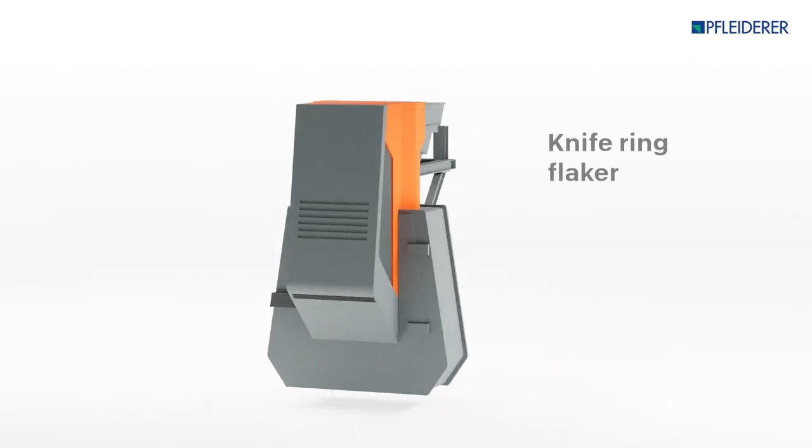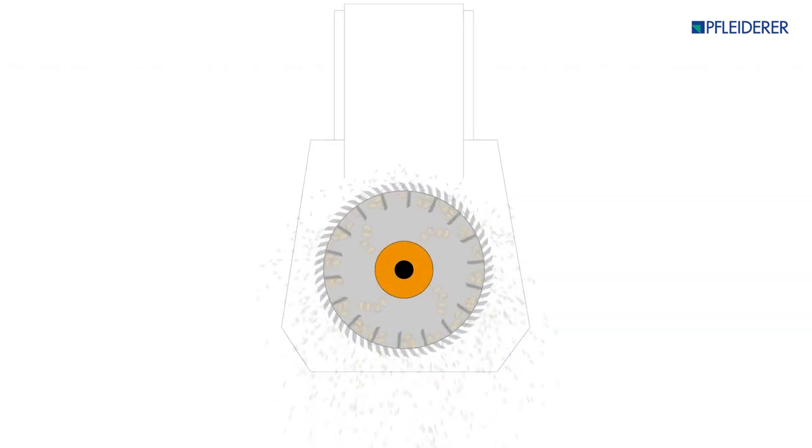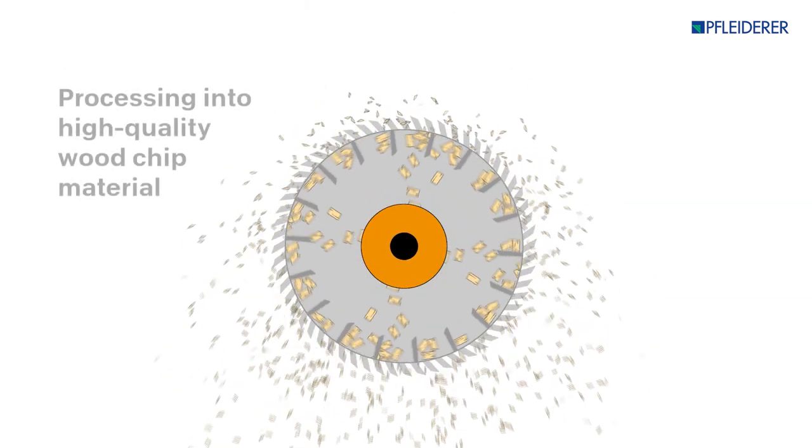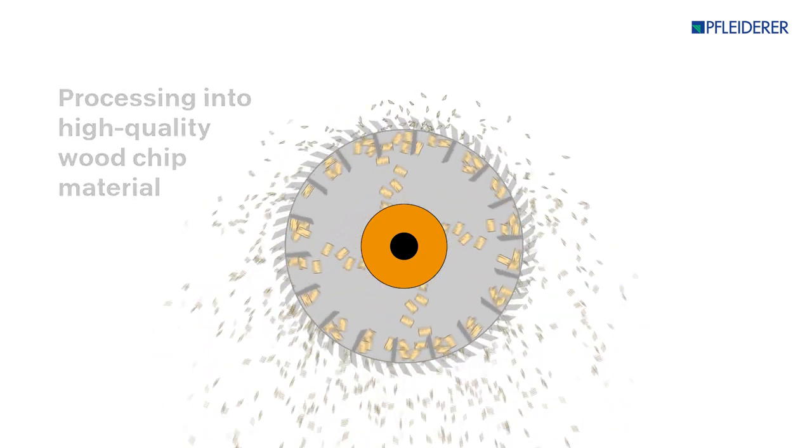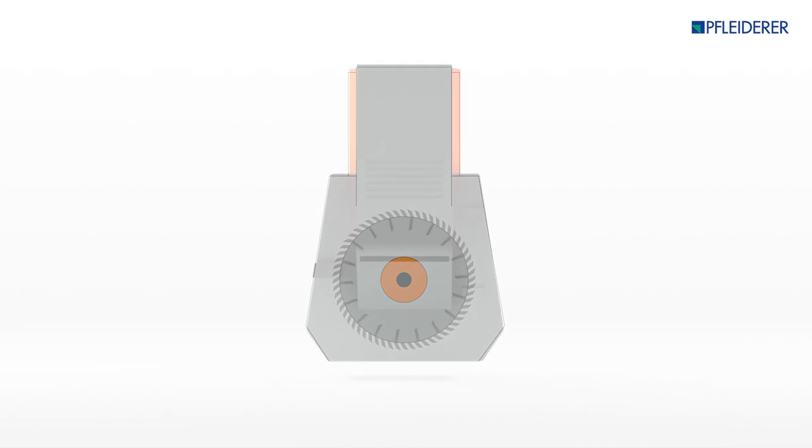The waste wood treated and decontaminated using these concise steps can then be turned into premium quality wood chips within a knife ring flaker and therefore into subsequently premium quality particle board.